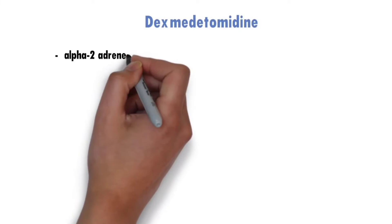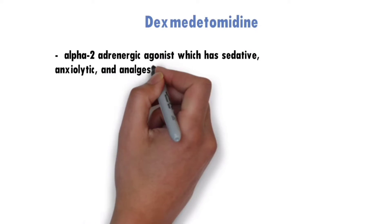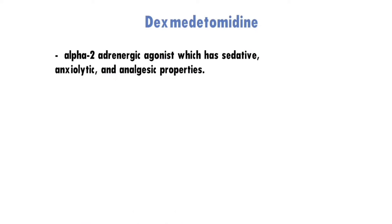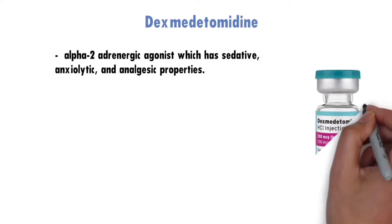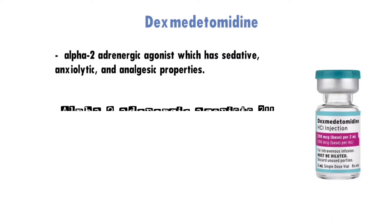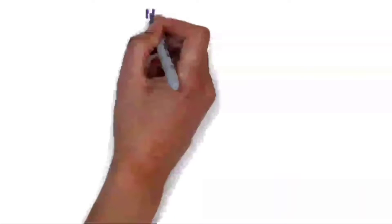Dexmedetomidine is an alpha-2 adrenergic agonist which has sedative, anxiolytic, and analgesic properties. What does alpha-2 adrenergic agonist mean? If you're not familiar with that term, don't worry — we'll have a small recall in pharmacology.